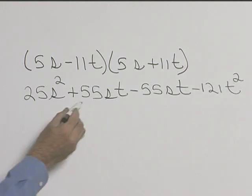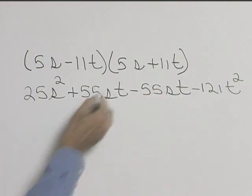Well now we're ready to simplify. We have 55st minus 55st. Those drop out to 0.